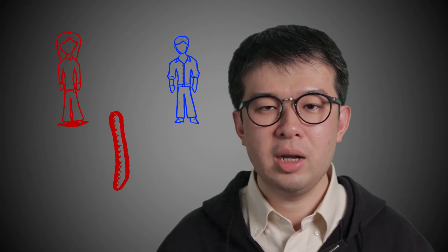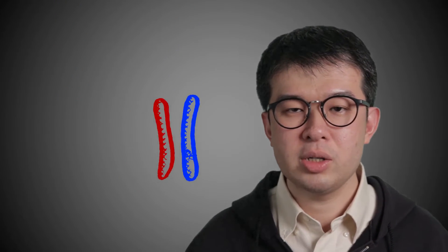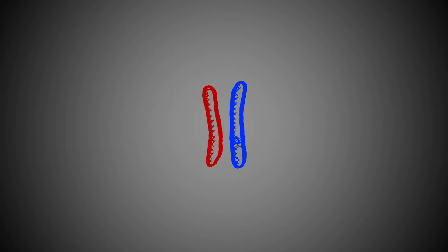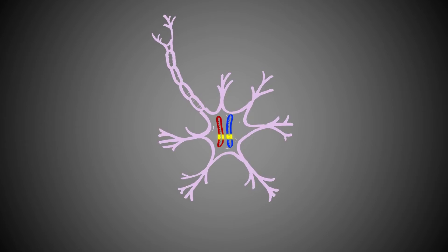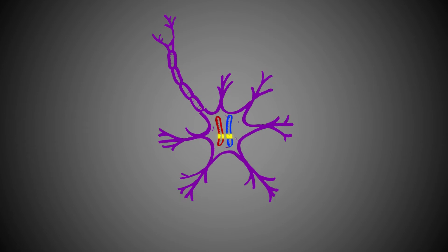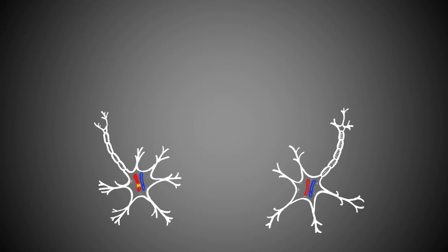Most genes in our brain have two copies, one inherited from our mother and one from our father. Scientists have generally thought that most cells express maternal and paternal allele similarly. But it turns out that things are not that simple for many genes.